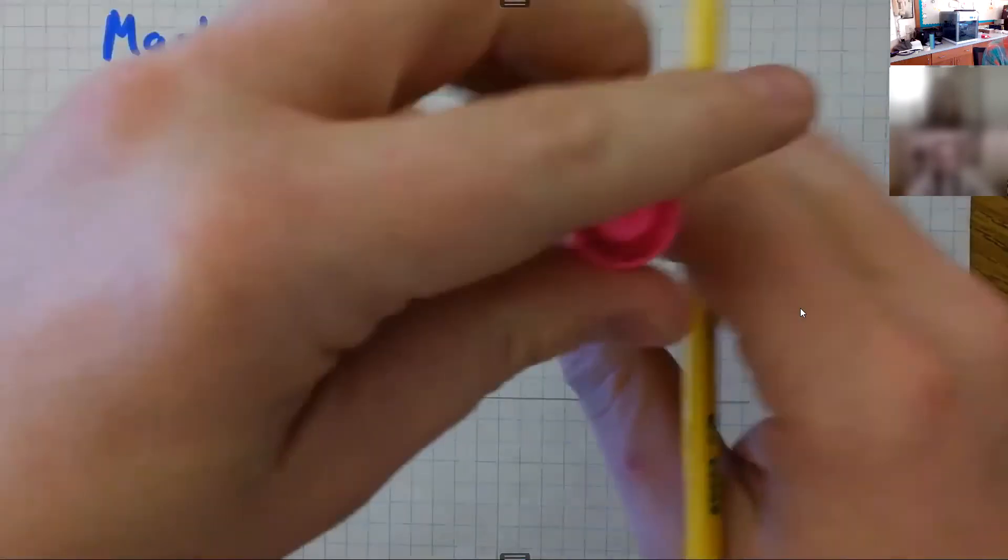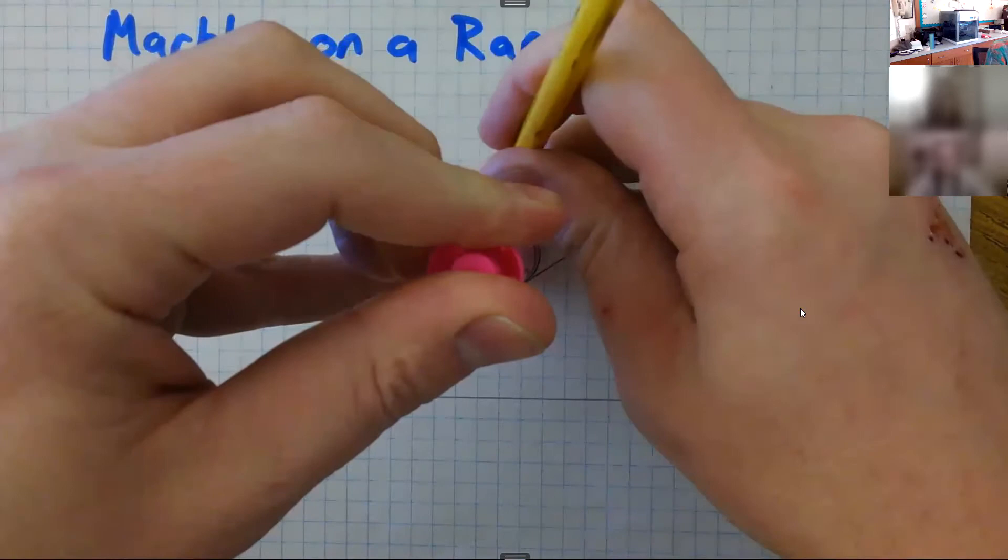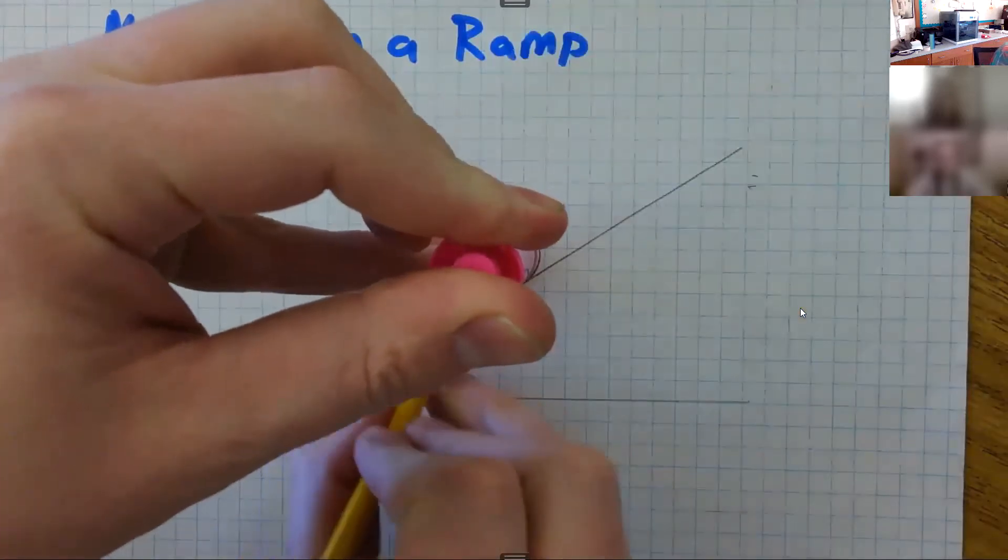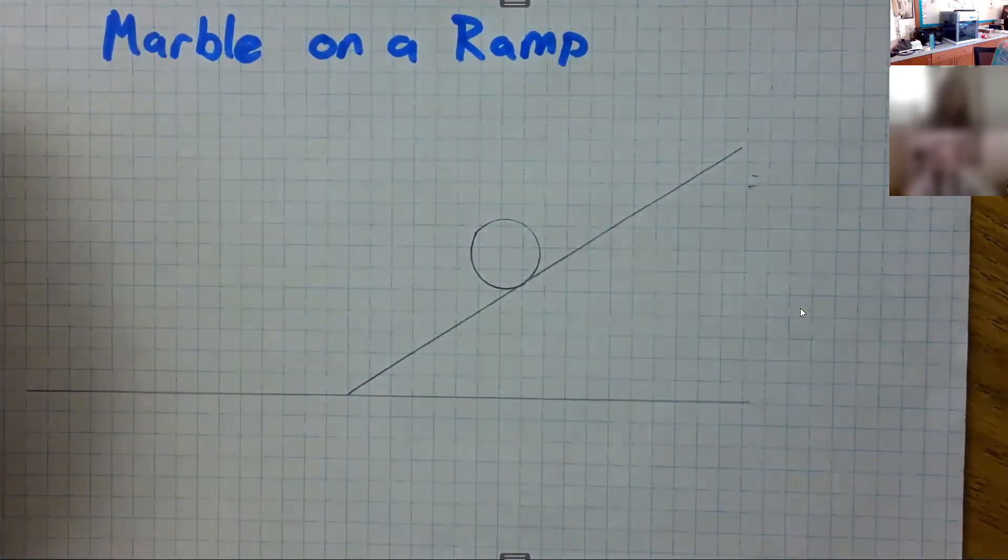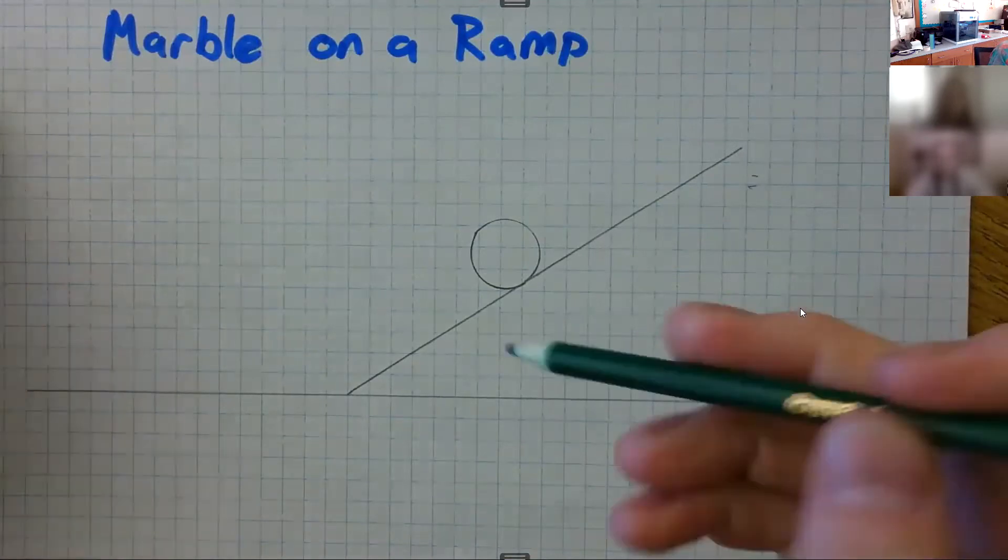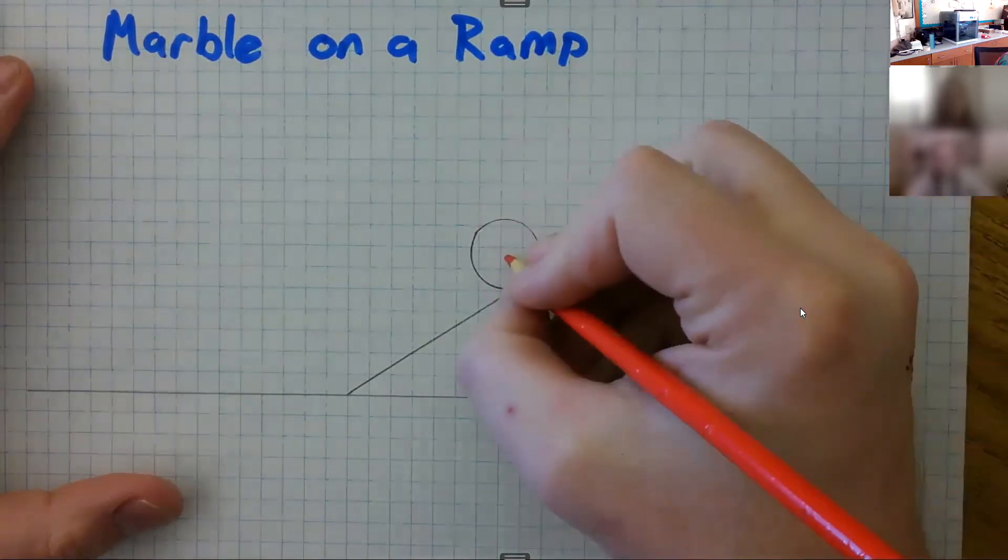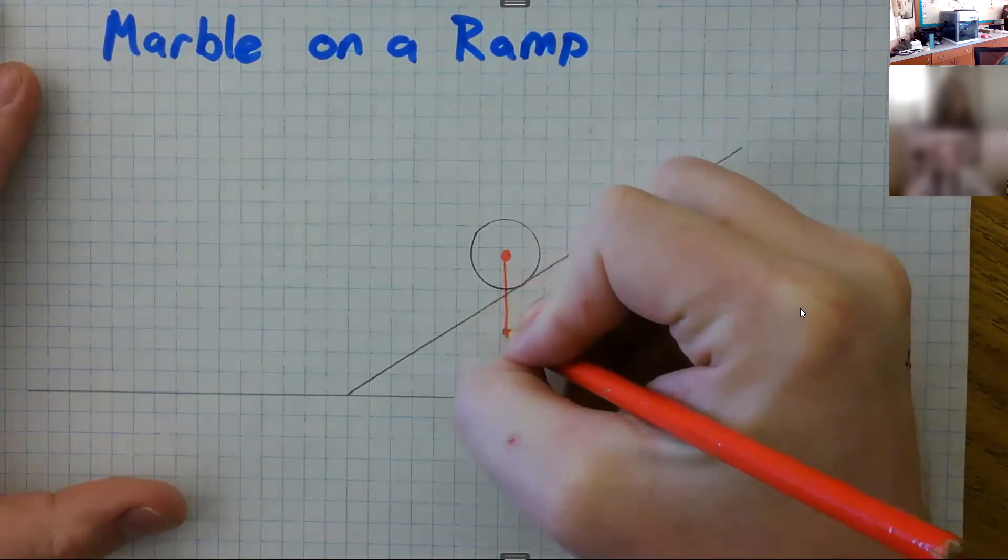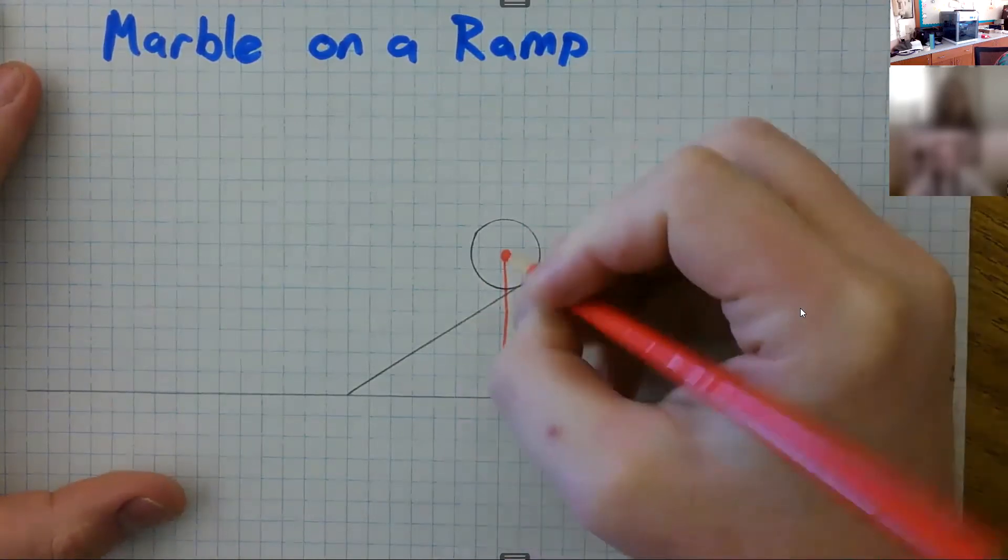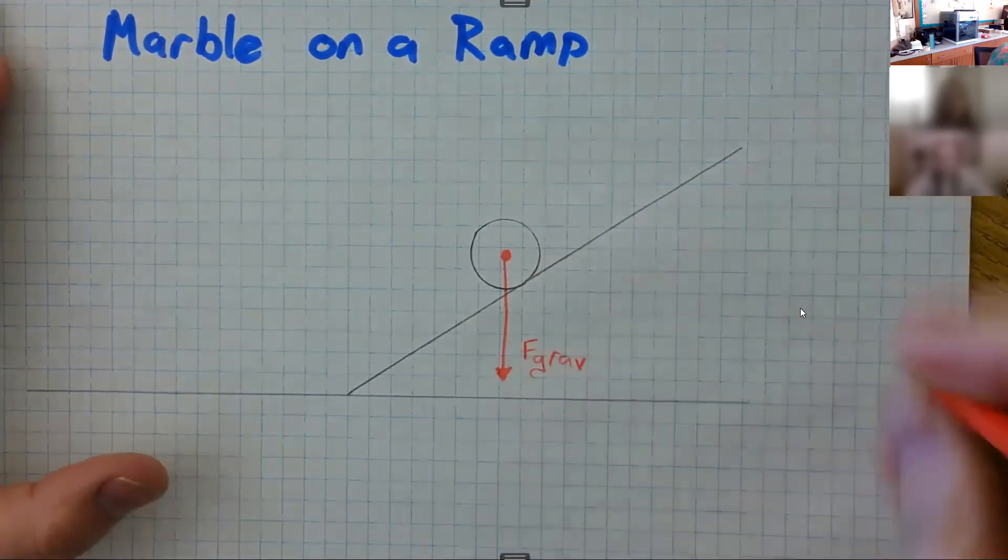I've drawn our ramp, I've drawn the ground and what is level. So we know that there's gravity affecting this marble. So I'm going to draw gravity from the center of mass of the marble pointing down. Let's label that F_grav. There's F_grav for gravity.